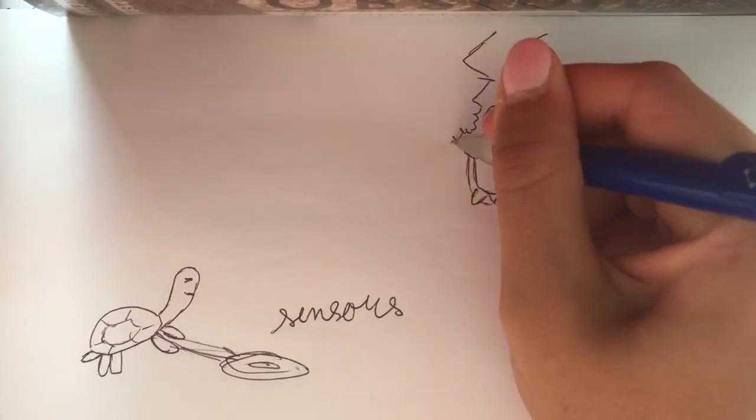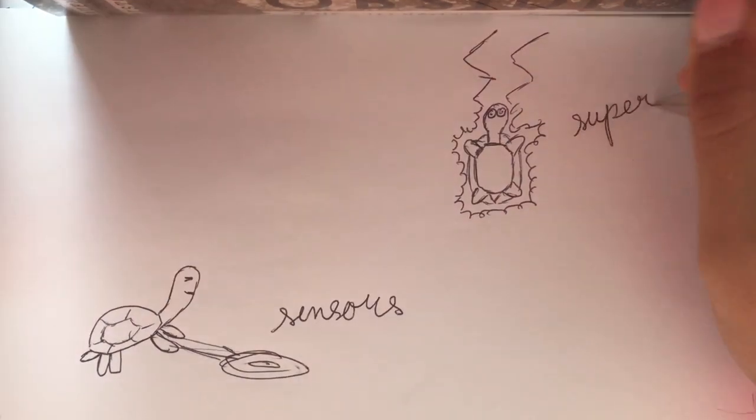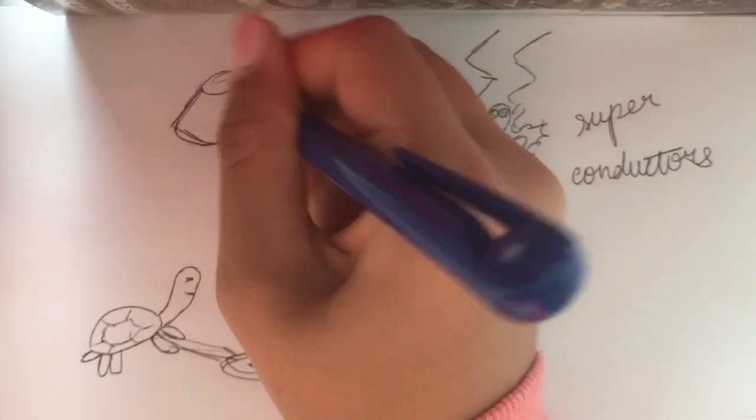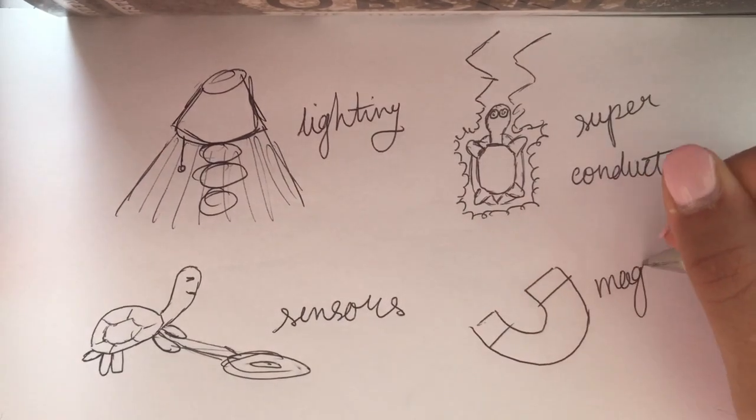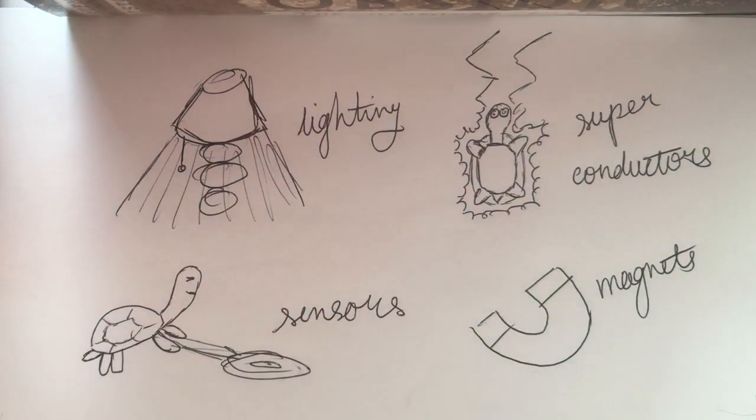This is because metal oxides have very different electrical properties from metals, semiconductors, and insulators. As a result, metal oxides are used in many different areas such as sensors, superconductors, magnets, and lighting.